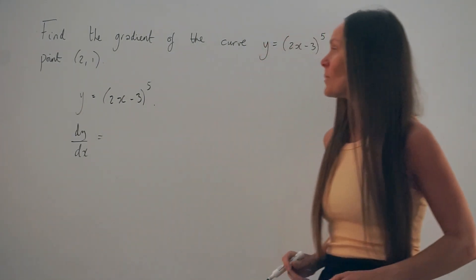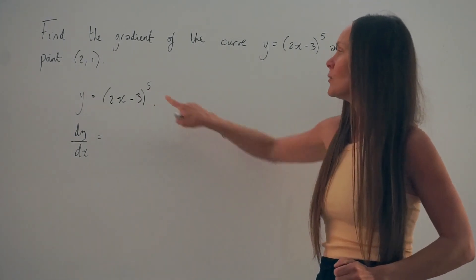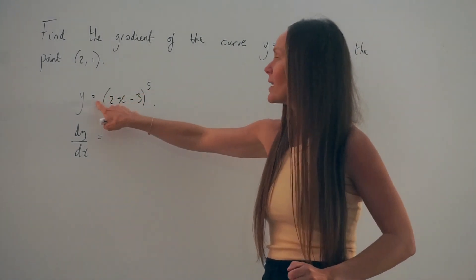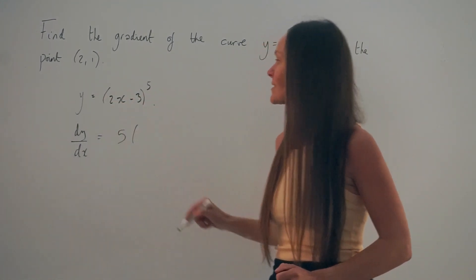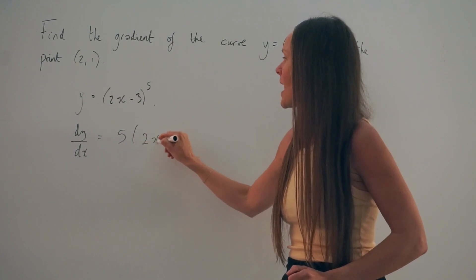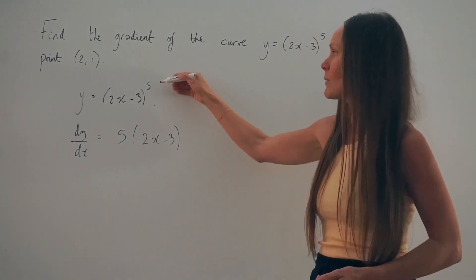So if we start by differentiating the outside of the brackets, we need to look at the power here, 5, and multiply it by this bracket. So 5 multiplied by 1 is 5. What's inside the bracket stays the same, and the power outside the brackets reduces by 1. So 5 take away 1 is 4.